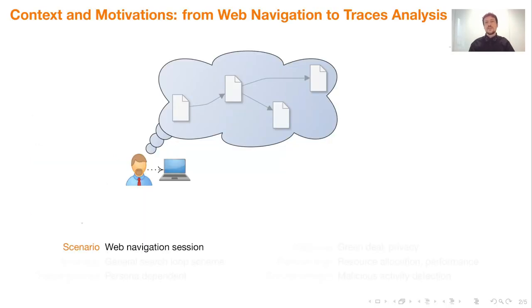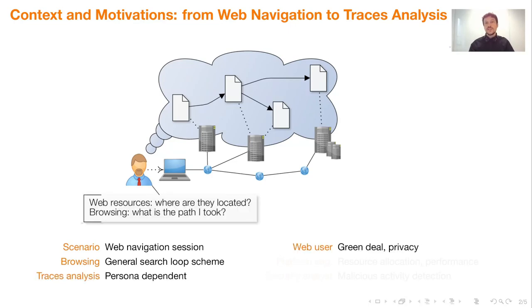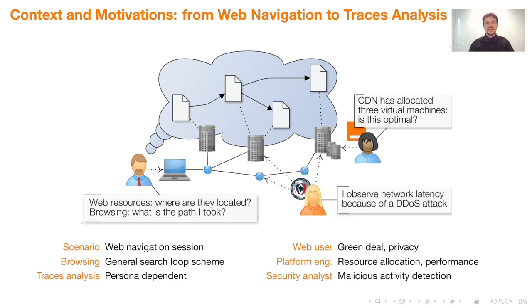Let's imagine that you are browsing the web driven by curiosity or for a specific purpose such as searching for a book or preparing a cyber attack. While browsing, navigation traces are created that are related to the resources being used. You might be interested in analyzing the paths and actions taken to reach these resources — for Green Deal or privacy concerns, but also for resource allocation, performance analysis, and eventually for malicious activity detection.